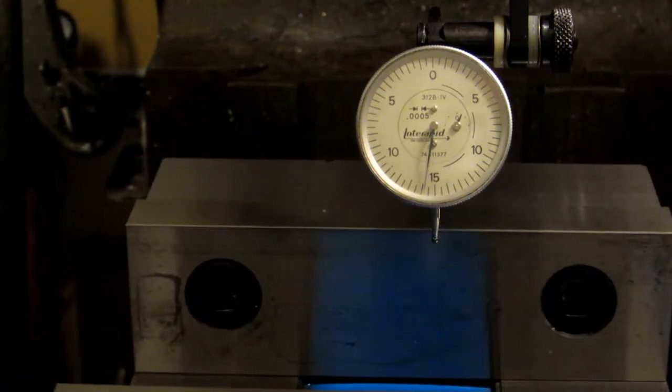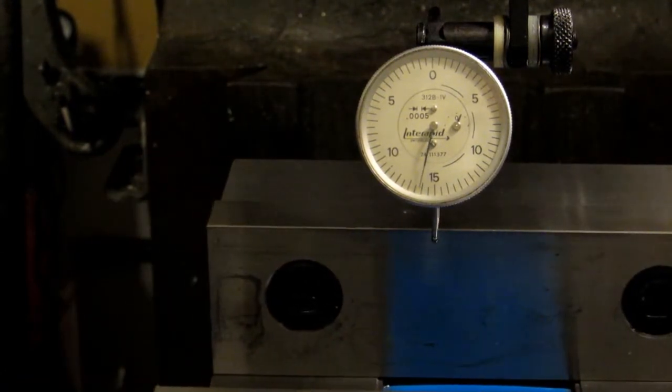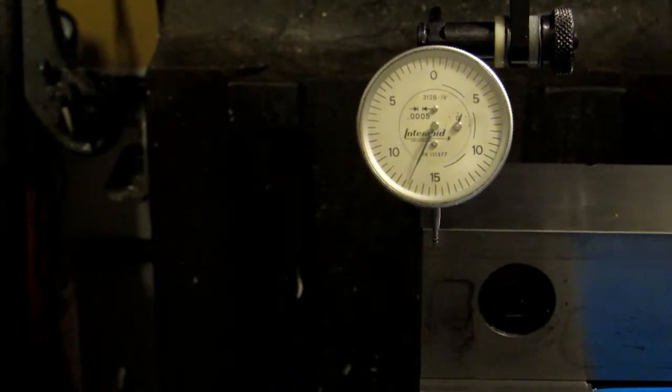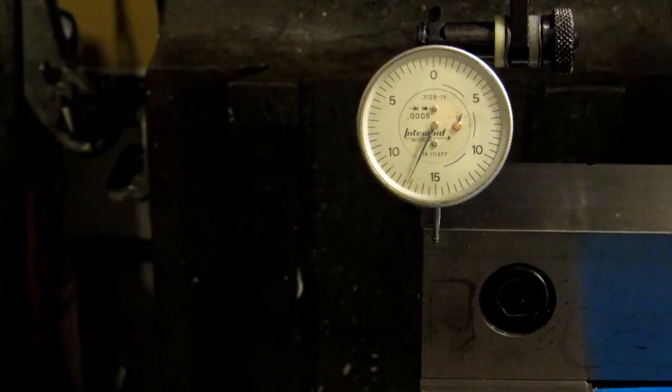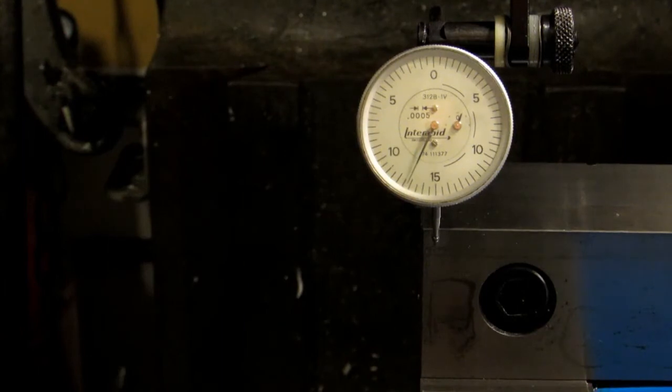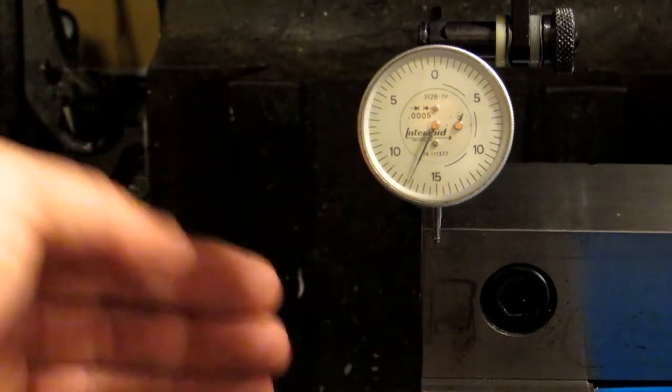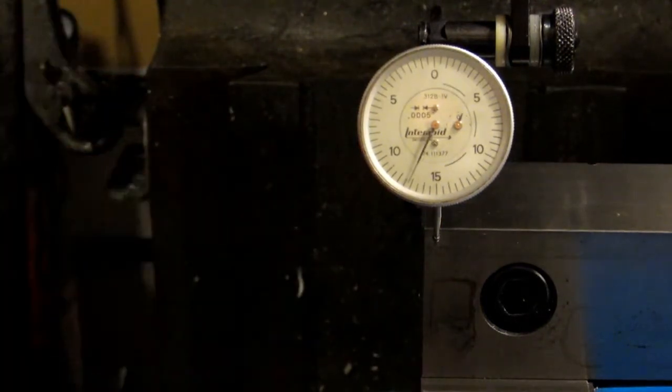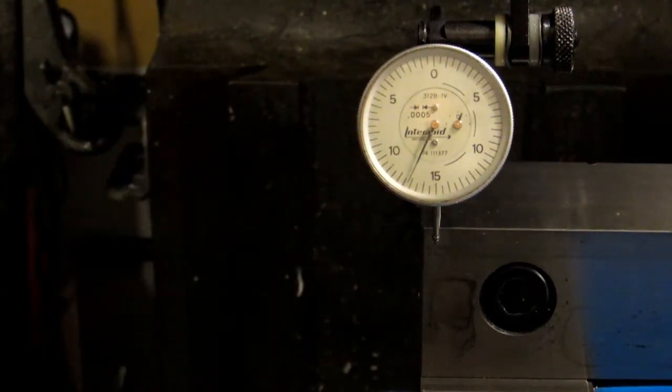And we're going to see if we're touching more or less on that side. So right now you can see we're touching just slightly over two thousandths less. We're not touching as much over here and we need to make this side of the vise move towards us. And we're going to do that with some love taps with a dead blow hammer.